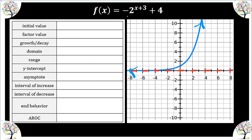Now let's take a look when we have: we're shifting left three, shifting up four, and we are going to have a vertical reflection. First I'm going to pencil in my new asymptote. We will be reflecting across the asymptote. This is y = 4.